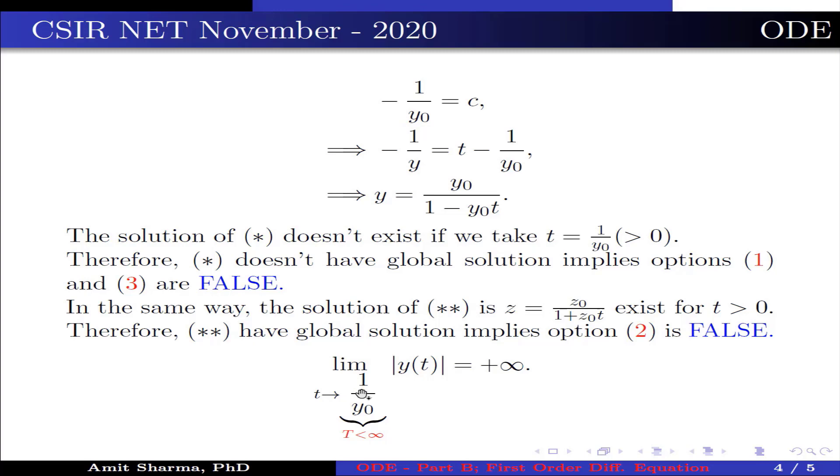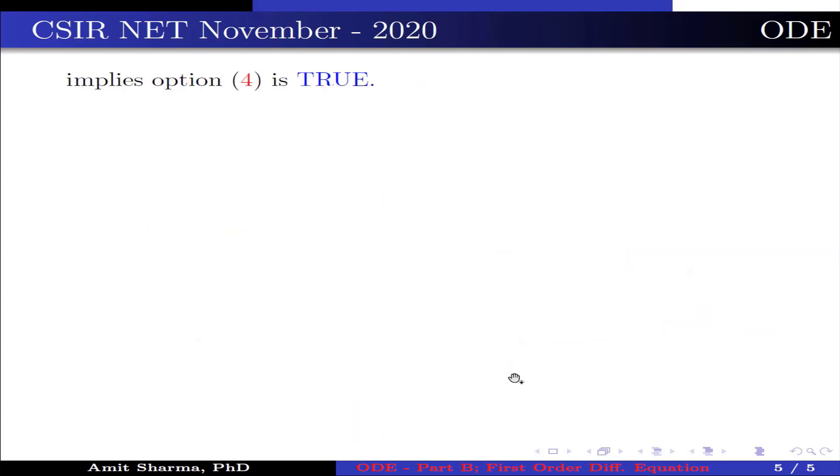Also, lim_{t→1/y₀} |y(t)| = +∞, where T = 1/y₀ < ∞. This implies option 4 is true. Hence option 4 is true.